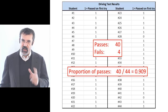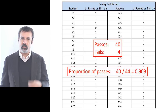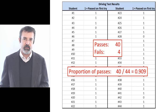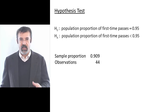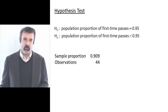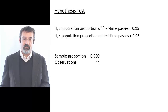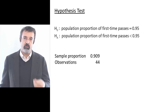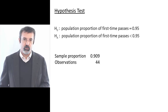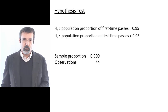So the proportion of passes on the first try is 90.9%. We can use this sample proportion to test our hypothesis. Our null hypothesis is that 95% of the students passed the driver's test on the first try — this is what we assume to be true. We have a sample of 44 observations in which the proportion of students who pass on the first try is 90.9%. This is what we observe.